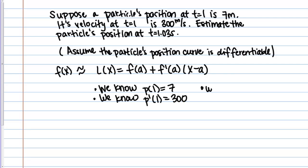So those are things I know. What do I want to know? Well, we want to approximate p of 1.03, which is the position at time equals 1.03. So hopefully you can see how this might line up with our linear approximation formula. In our case, the function we're dealing with is the position function. And our a, which is the value we know about, is 1. And our x, which is the value we want to approximate things at, is 1.03.